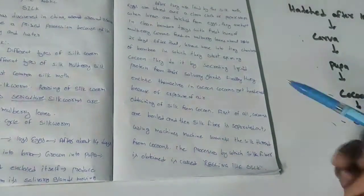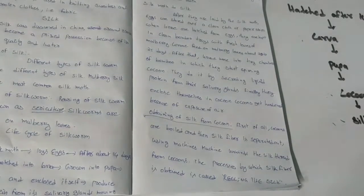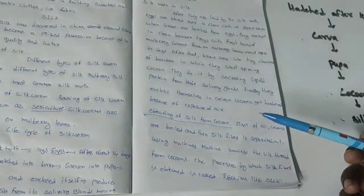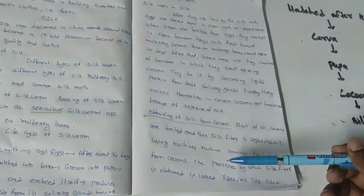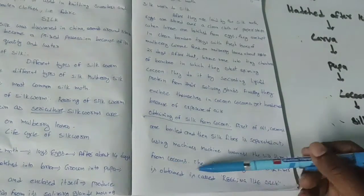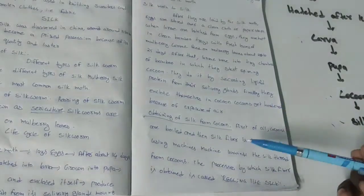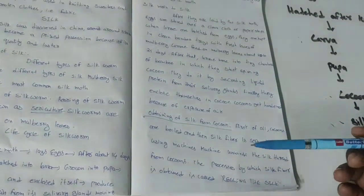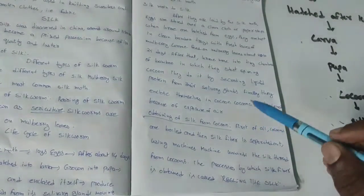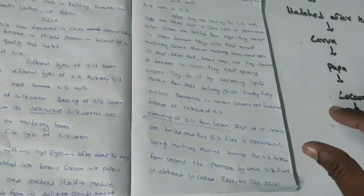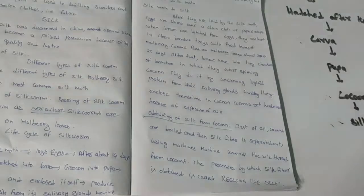To obtain silk from the cocoon, all the cocoons are collected and boiled. When boiled, the silk fiber is separated out using machines, which unwind all the silk threads from the cocoons. This process by which silk fiber is obtained is called reeling of the silk. The cocoons are boiled because the silk moth inside dies and the gummy substance holding the threads dissolves, making it easier to unwind the silk threads.